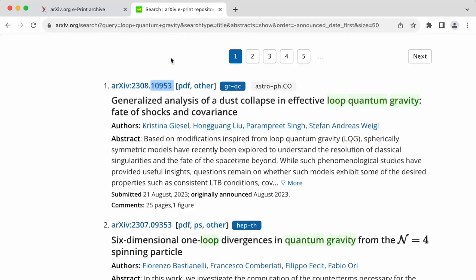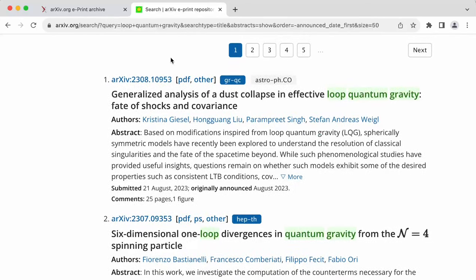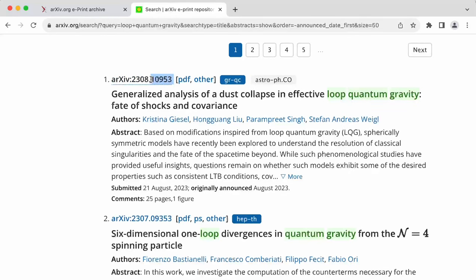The remaining digits after the dot separator simply label the serial number of the paper. And you can see that every month, thousands and thousands of papers are posted to the arXiv. So at present, they have a five-digit serial number